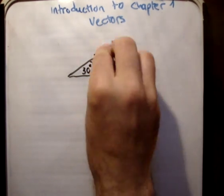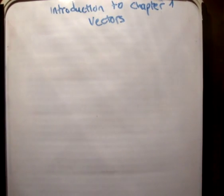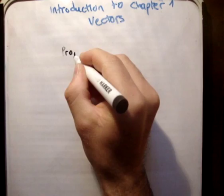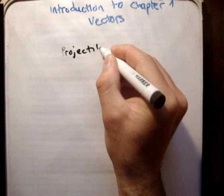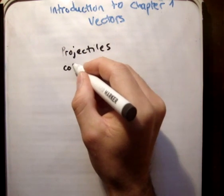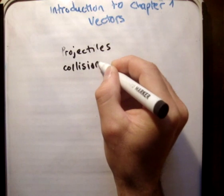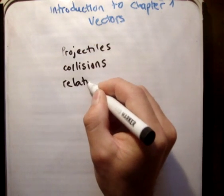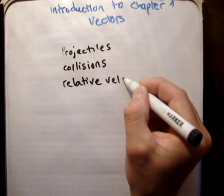However, by using vectors you're able to do lots of things, and in the Applied Maths course you have, there are chapters on things like projectiles, on collisions, on relative velocity, and so on.